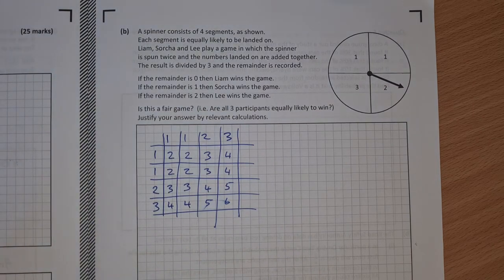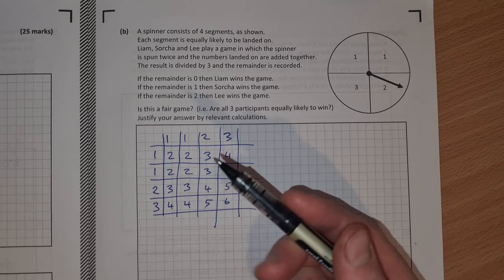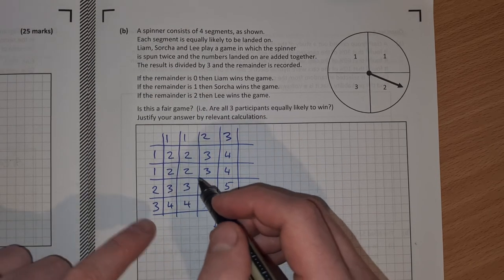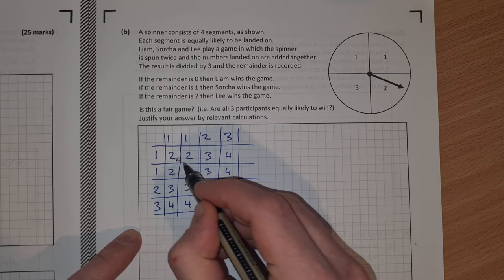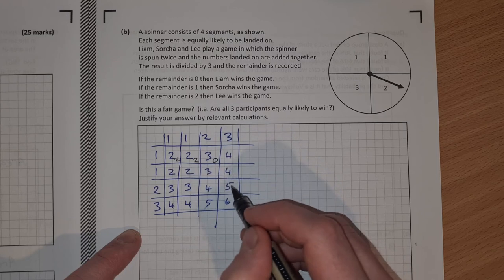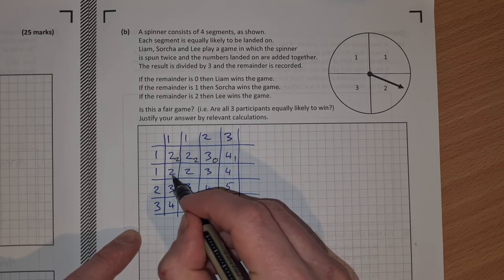Then we're told that the result is divided by 3 and the remainder is recorded. So let's divide each of these by 3 and now I'm going to write the remainder in black. So if I divide 2 by 3, it goes in 0 times. Remainder is 2. Again here, remainder is 2. 3 goes into 3 once with a remainder of 0. 3 goes into 4 once with a remainder of 1.